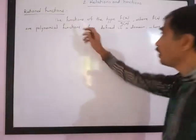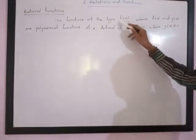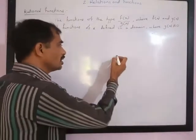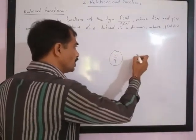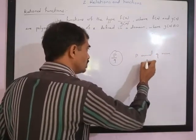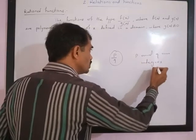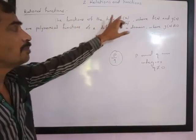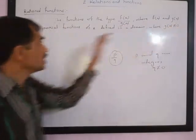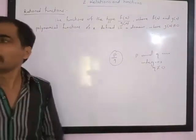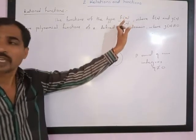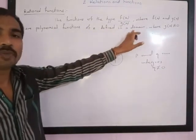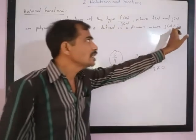Next is rational functions. The functions of the type f(x) upon g(x). Just as rational numbers are numbers in the form p upon q where p and q are integers and q is not equal to 0, here also rational functions are of the type f(x) upon g(x) where f(x) and g(x) are polynomial functions, defined in a domain where g(x) is not equal to 0.